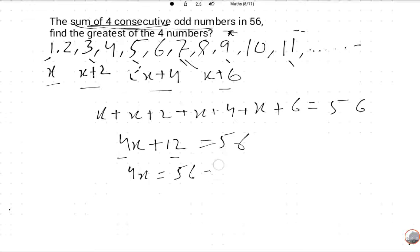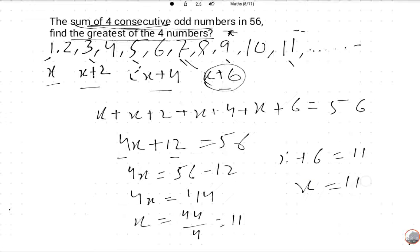So x is equal to 44 divided by 4 is 11. So the greatest of the 4 numbers, what is the greatest 4 number? x plus 6 is equal to 11 plus 6, which is equal to 17.